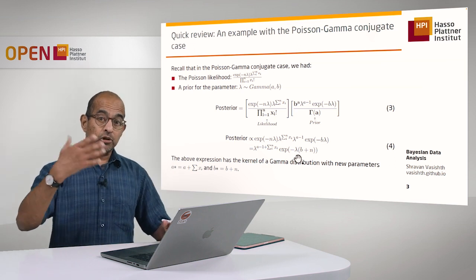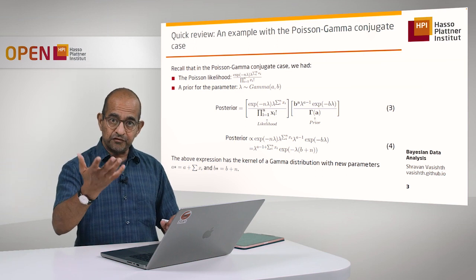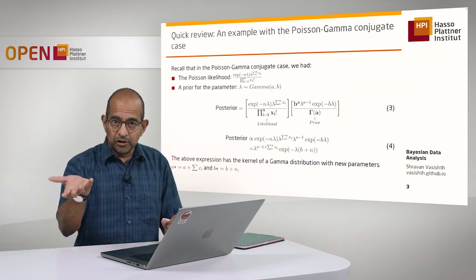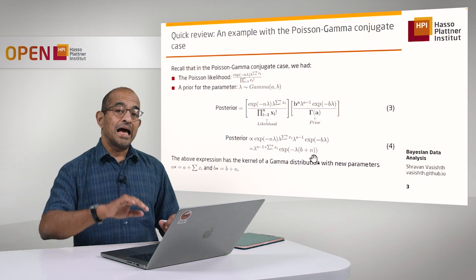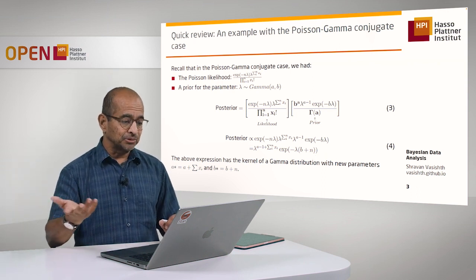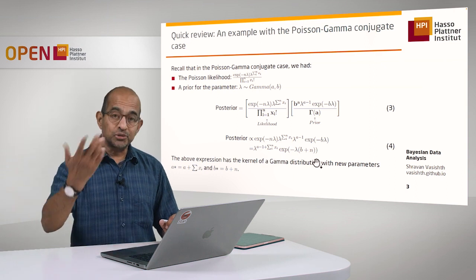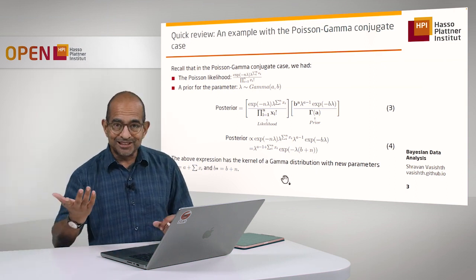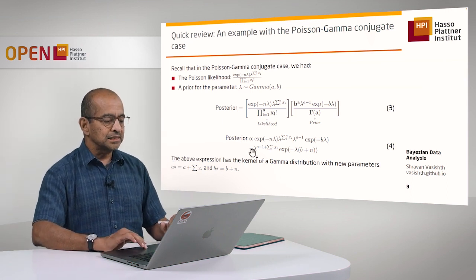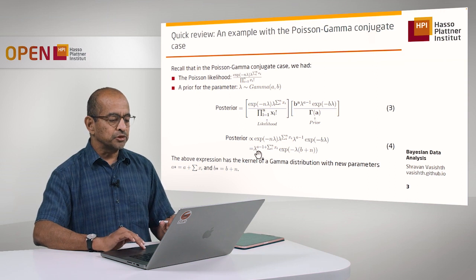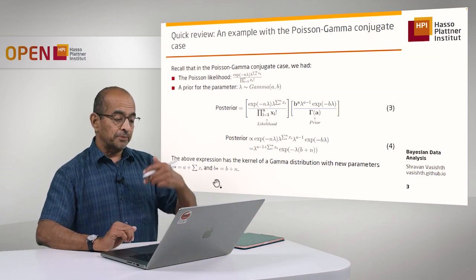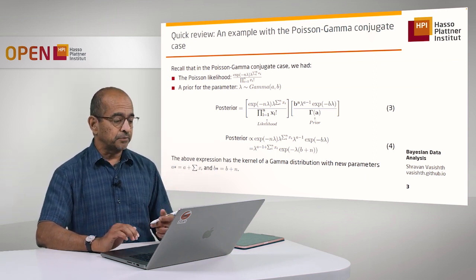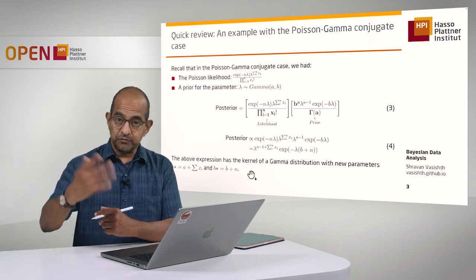The reason it's called a Poisson-Gamma conjugate case is that the prior has the form of the gamma distribution, and interestingly the posterior also ends up having the same gamma form. So I'm looking at the kernel of a new gamma distribution with updated A and B parameters: the new A is sum of X plus A, and the new B is B plus N. That's how I concluded that the updated parameters in the posterior for lambda are those terms. This is what we did entirely by hand, without any computing tools.